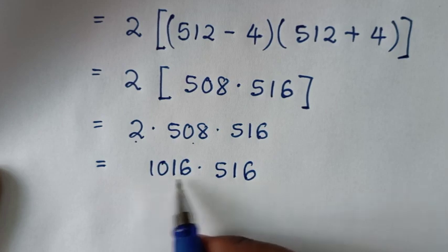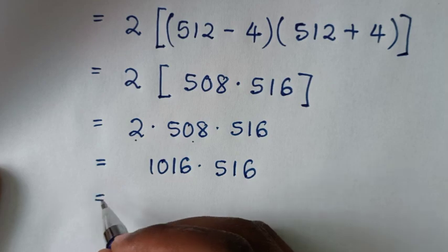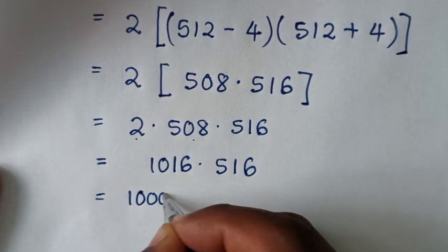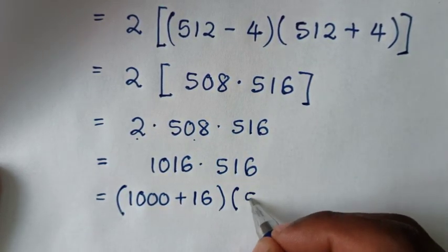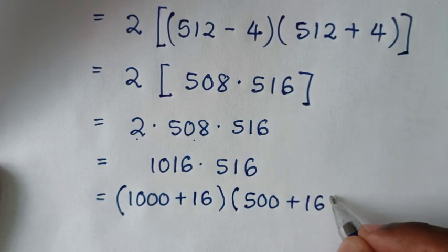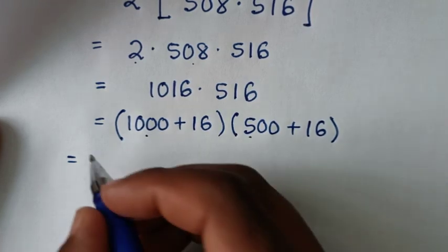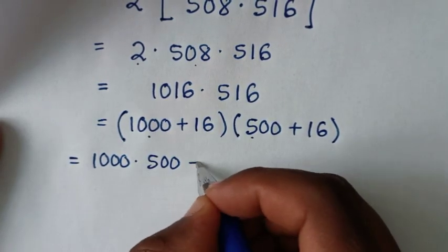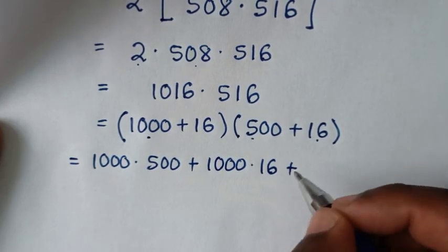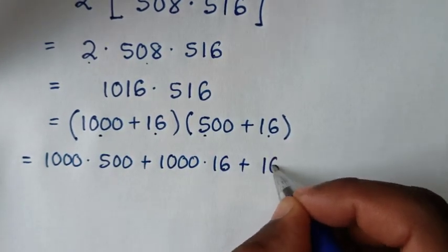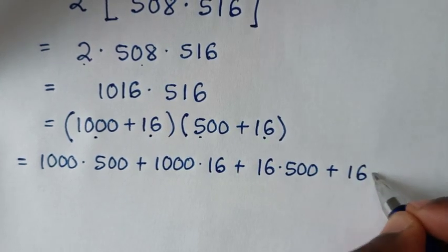Now you can see when we multiply these numbers it has 16 at the end, so to easily multiply this, 1016 is the same as 1000 plus 16, times 516 which is the same as 500 plus 16. Then it will be equal to: this times this, so 1000 times 500, plus 1000 times 16, plus 16 times 500, plus 16 times 16.